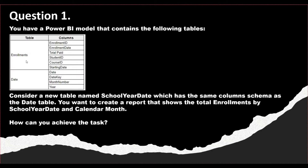Question number one: you have a Power BI model that contains the following tables — the Enrollments table and a Date table. In the Enrollments table you have columns like enrollment ID, enrollment date, total paid, student ID, course ID, and starting date. In the Date table you have columns like date, date key, month number, and year. Consider a new table named School Year Date which has the same column schema as the Date table. You want to create a report that shows total enrollments by school year date and calendar month.